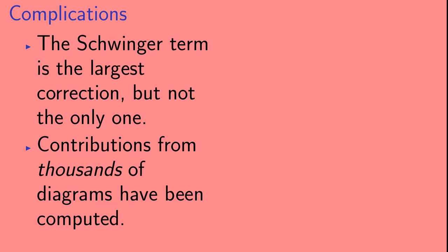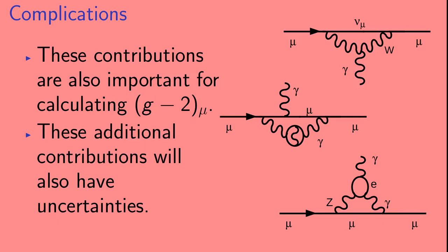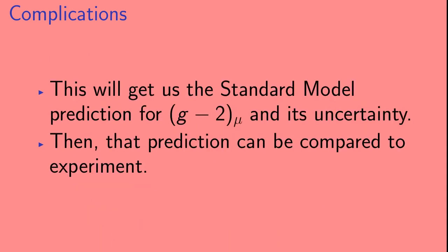The Schwinger term is the largest correction, but it is not the only one. In fact, contributions from thousands of diagrams have been computed. These contributions are also important for calculating G minus 2 of the muon. And, these additional contributions will also have uncertainties. Now, in principle, we can calculate these contributions and their uncertainties to G minus 2 of the muon. However, actually, there are an infinite number of diagrams. And, this means we also have to take into account uncertainties resulting from any contributions that we didn't calculate. So, this will get us the standard model prediction for G minus 2 of the muon and its uncertainty. And, then, that prediction can be compared to experiment.